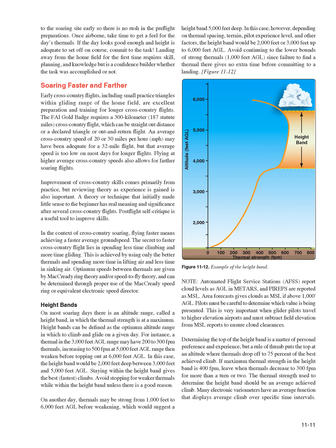Optimum speeds between thermals are given by McCready ring theory and can be determined through proper use of the McCready speed ring or equivalent electronic speed director. Height bands: on most soaring days there is an altitude range called a height band in which thermal strength is at a maximum. For instance, a thermal in the 3,000 feet AGL range may have 200-300 FPM thermals, increasing to 500 FPM at 5,000 feet AGL, then weakening before topping out at 6,000 feet AGL. In this case, the height band would be 2,000 feet deep between 3,000 and 5,000 feet AGL.